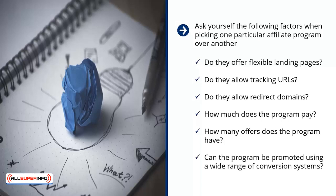Can the program be promoted using a wide range of conversion systems? If you can use direct, mailing list, content, and other types of traffic conversion systems, you might want to pick such a program. Pay close attention to all of the above. If you find a program that is very flexible, you might make more money with it than more rigid programs.